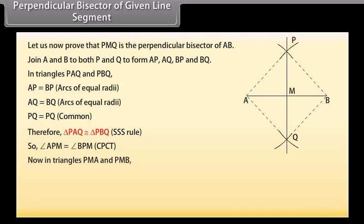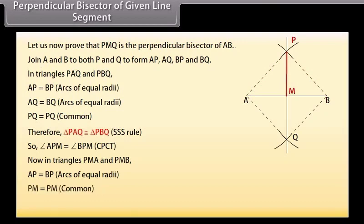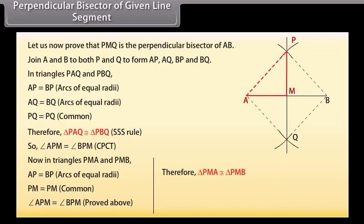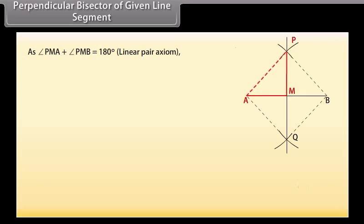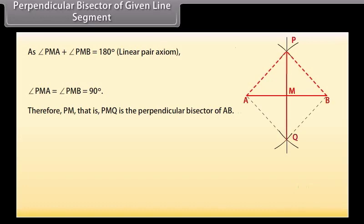Now, in triangles PMA and PMB: AP equals BP, arcs of equal radii; PM equals PM, common; angle APM equals angle BPM as proved above. Therefore, by SAS congruence rule, triangle PMA is congruent to triangle PMB. So, AM equals BM and angle PMA equals angle PMB by CPCT. Now, by using the linear pair axiom, angle PMA plus angle PMB equals 180 degrees, which gives angle PMA equals angle PMB equals 90 degrees. Therefore, PMQ is the perpendicular bisector of AB.